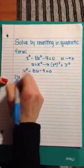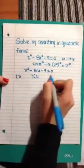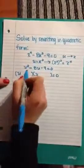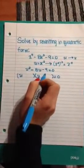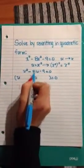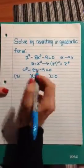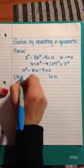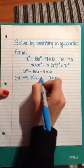Once you do that, you have to factor. So we have the u here and the u here will equal 0. We need two numbers that will equal out to negative 9 when multiplied and when added come out to negative 8. The two numbers will be negative 9 and positive 1.